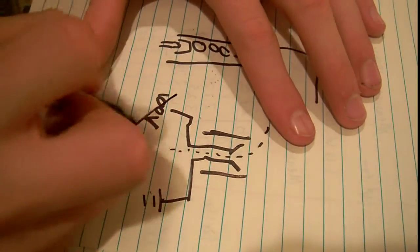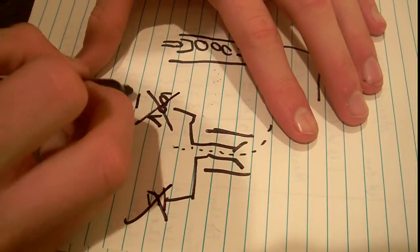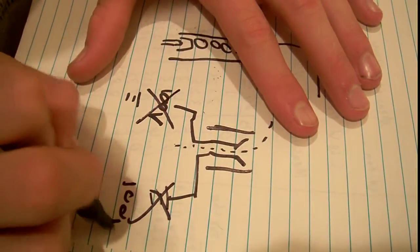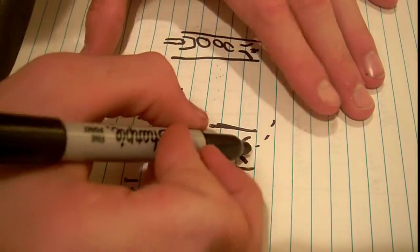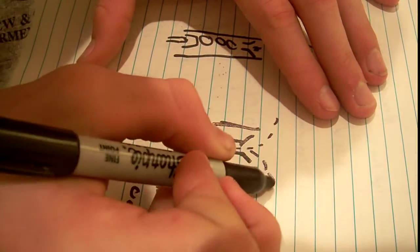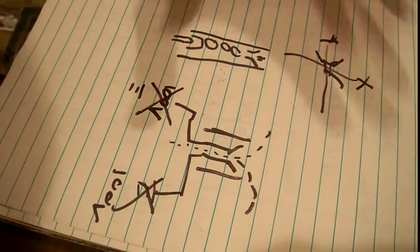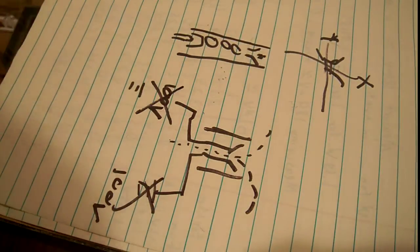Say we reversed it. So instead, you had ground here and 100 volts here. The line would then, instead, curve to the right. So that's the way it works.